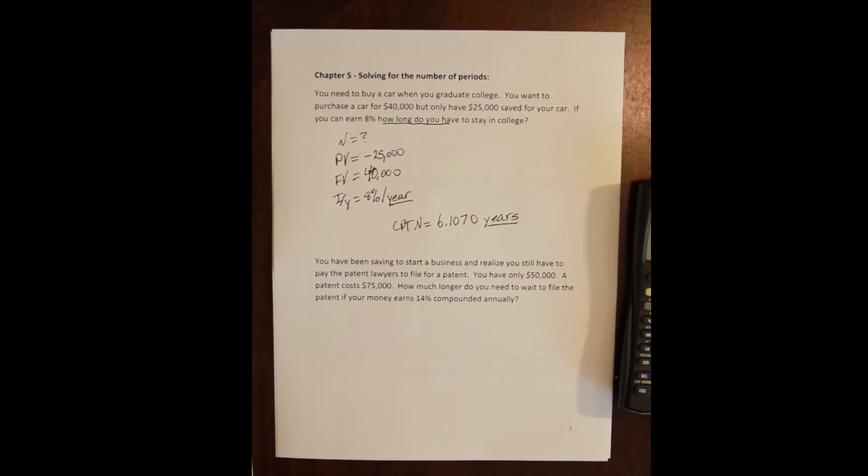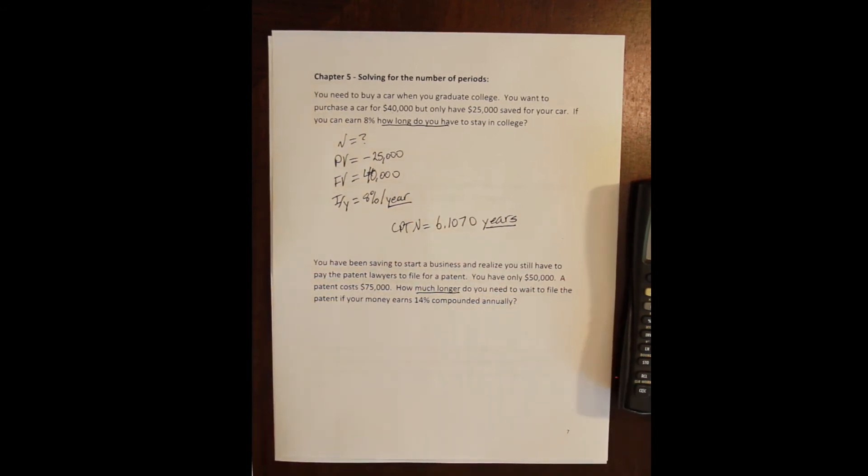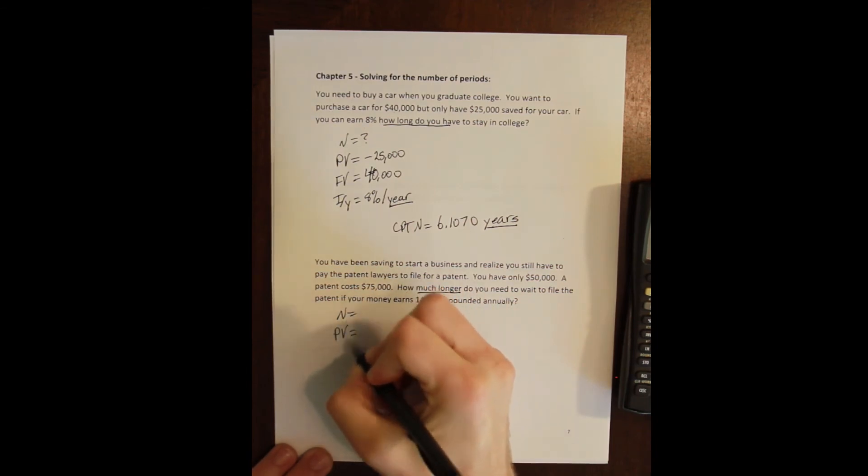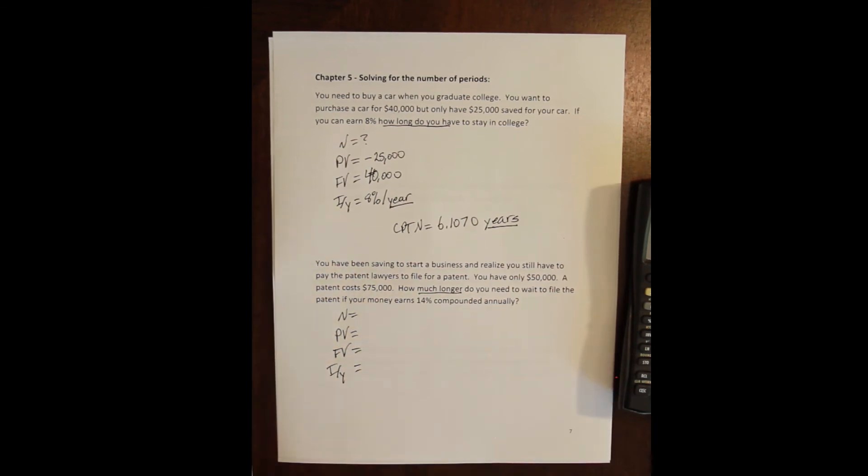Now, the second problem is similar. It says you have been saving to start a business and you realize that you still have to pay the patent lawyers in order to file for a patent. You only have $50,000 and a patent costs $75,000. How much longer do you need to wait to file the patent if your money earns 14% compounded annually? So again, it's pretty straightforward laying out what we need to do. How much longer do we need to wait? So we're trying to solve for the number of periods this investment is going to last. Then we need the present value of the investment, the future value of the investment and the rate that we're going to earn.